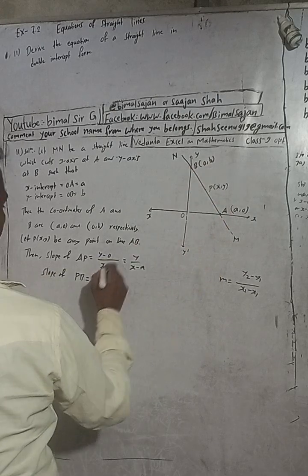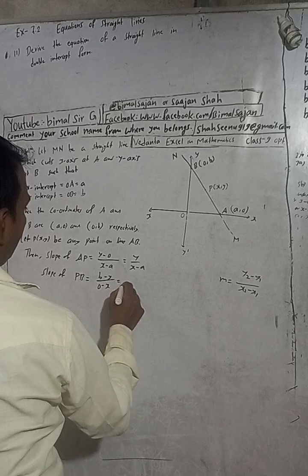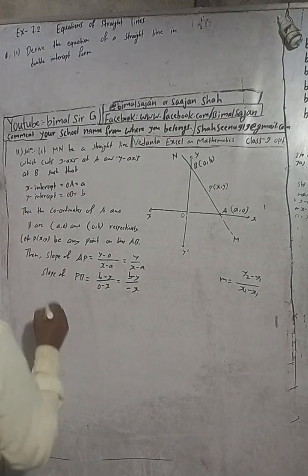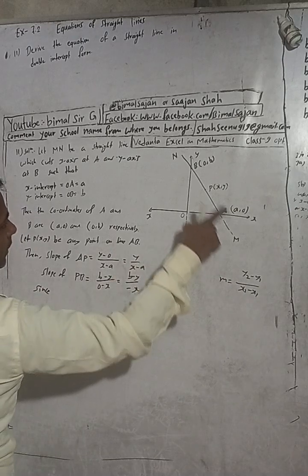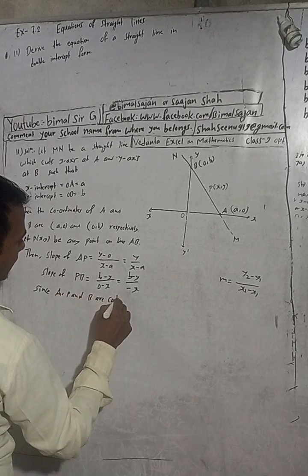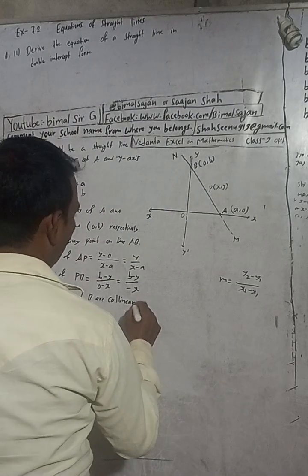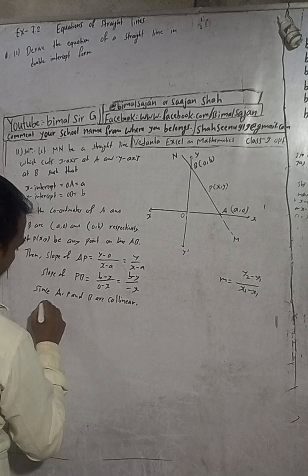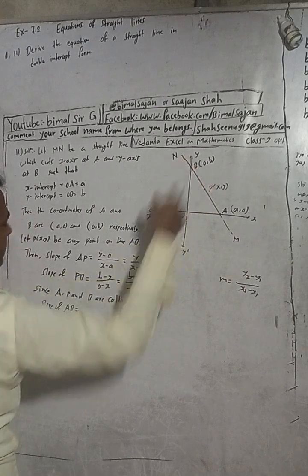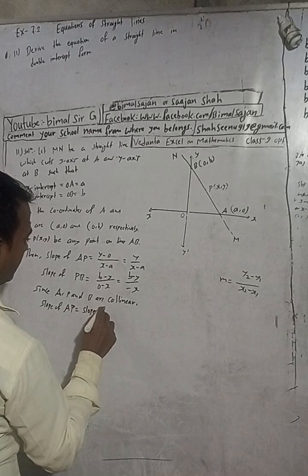So slope of PB is (b minus y) divided by (negative x). Since A, P, and B are collinear — meaning they are on the same line — the slope of AP must equal the slope of PB. Therefore: y divided by (x minus a) equals (b minus y) divided by (negative x).